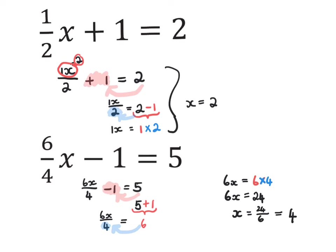Now substitute back into the formula. If x equals 4: 6 multiplied by 4 is 24, divided by 4 is 6, minus 1 is 5 — and the answer is indeed correct. It's always a good idea to check your final answer to see if the equation is true for the value you calculated.